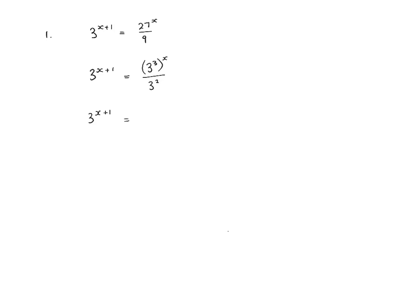We simplify 3 cubed to the power of x to become 3 to the power 3x. Then we simplify the right-hand side further to become 3 to the power 3x minus 2. The only way 3 to the power x plus 1 equals 3 to the power 3x minus 2 is if x plus 1 equals 3x minus 2. Rearranging gives 3 equals 2x, so x equals 3 over 2.